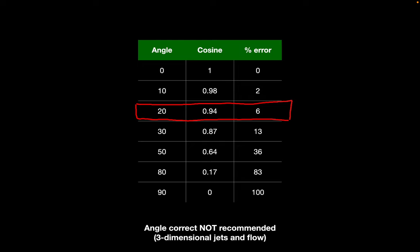Angle correction is not recommended. Many ultrasound machines have an angle correction feature where you can change the direction of the Doppler cursor line and the machine will calculate velocity based on that correction. However, textbooks do not recommend using angle corrections because these flows are often three-dimensional in nature, jets are very hard to interrogate, and you may not know which direction to apply the correction — potentially introducing further error.